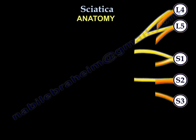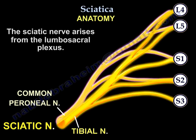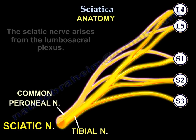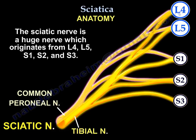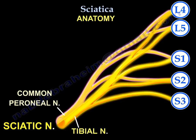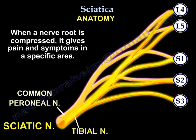The sciatic nerve arises from the lumbosacral plexus. It is a huge nerve that comes from L4, L5, S1, S2, and S3. There are five nerve roots and each one has its own dermatomal distribution.